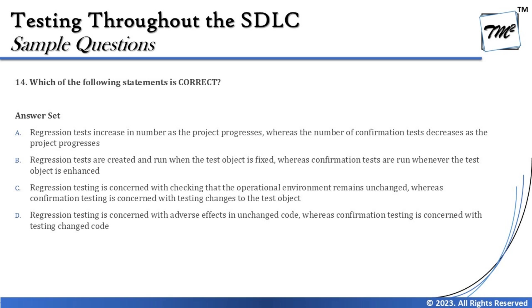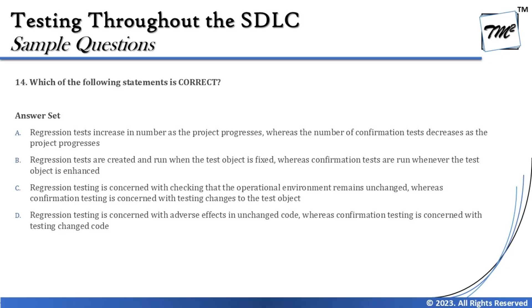Option B says regression tests are created and run when the test object is fixed, whereas confirmation tests are run when the test object is enhanced. This is the wrong definition — the definitions of regression and confirmation testing have been swapped. Option C says regression testing checks that the operational environment remains unchanged; that is also incorrect, and confirmation testing being concerned only with changes to the test object is wrong as well.